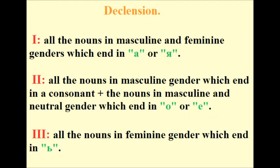There are three types of noun declension in Russian language. The first type includes all the nouns in masculine and feminine genders which end in А or Я. The second type includes all the nouns in masculine gender which end in a consonant, plus the nouns in masculine and neutral gender which end in О or Е. And the third type of declension includes all the nouns in feminine gender which end in the sign of palatalization.